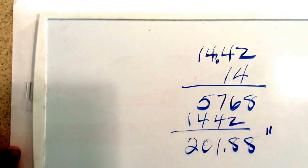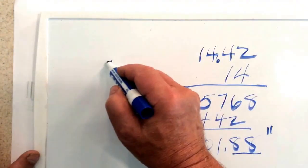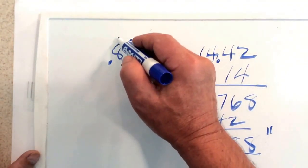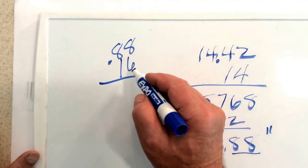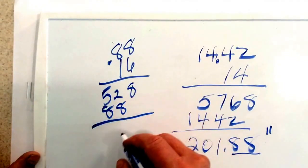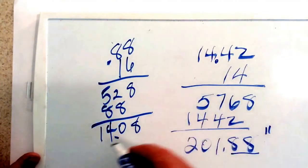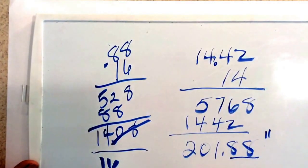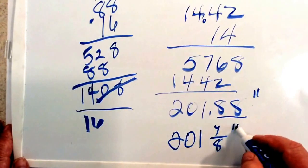We don't have 0.88 inches on any tape measure, so what we have to do with this 0.88 is turn it into 16ths of an inch. We multiply 0.88 times 16 and we get 14.08 sixteenths. We're going to drop off the 0.08, and our rafter length will end up being 201 and 7/8 inches long.